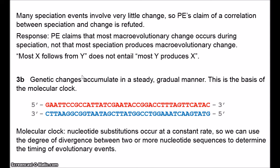Mutations in the genome involve adding a nucleotide, deleting a nucleotide, or substituting one nucleotide for another. The basic idea of the molecular clock is that nucleotide substitutions occur at a reasonably constant rate. We can use the degree of divergence between two or more nucleotide sequences to help determine the timing of evolutionary events. By simply counting the number of differences between two sequences, we can estimate when the two species diverged — and this turns out to work fairly well.